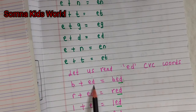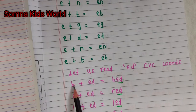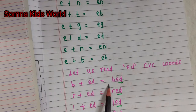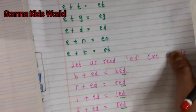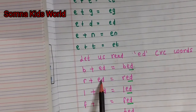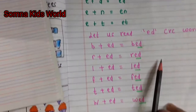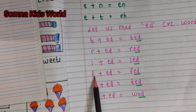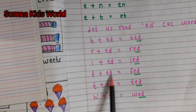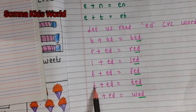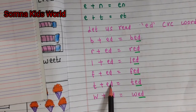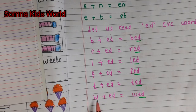Like this: b-ed — bed, r-ed — red, l-ed — led, f-ed — fed, t-ed — ted, w-ed — wed.